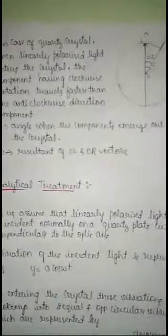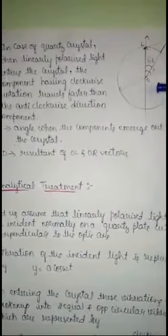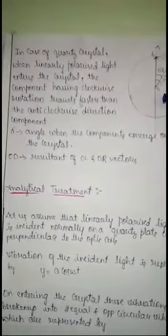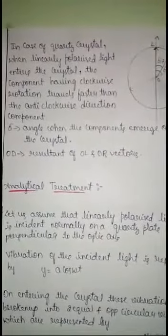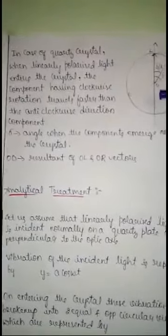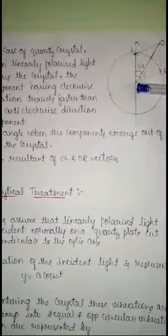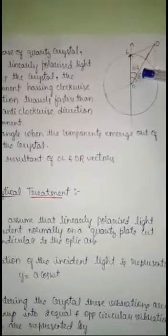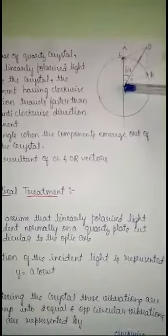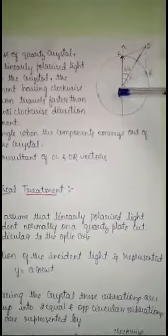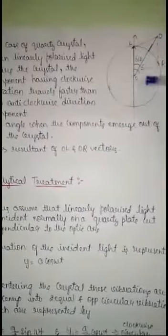In the case of a quartz crystal, when a linearly polarized light enters the crystal, the component having the clockwise rotation travels faster than the anticlockwise component. Here, δ is the angle when the components emerge out of the crystal. The resultant of these two vectors OL and OR is along OD. This is the case of a quartz crystal.